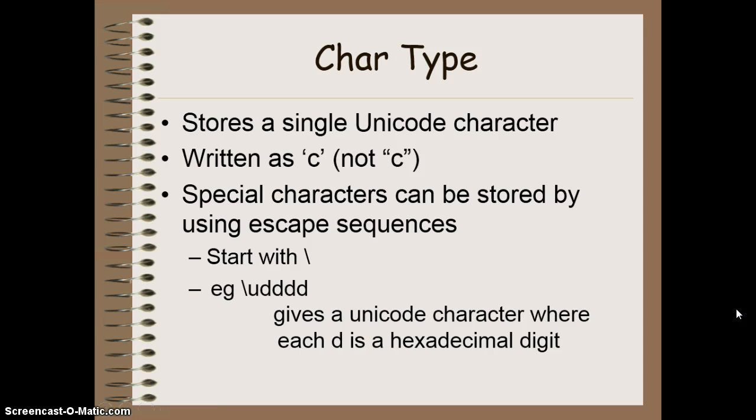We also have the char type, which is a character. It stores a single Unicode character. When you do this, you need to make sure you're using single quotes. Chars are always stored in single quotes, whereas double quotes represent strings. And you can also represent special characters by using the backslash, the escape sequence. So you can do backslash n for a new line, or backslash t for a tab, or backslash u, and then provide the four-digit Unicode value, which will give you that particular character as well.